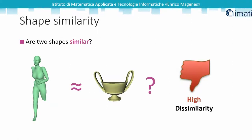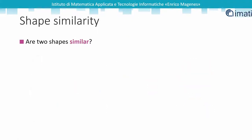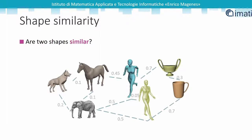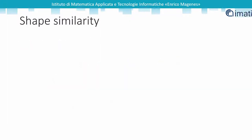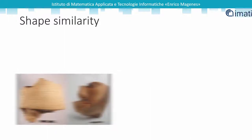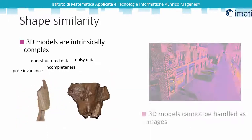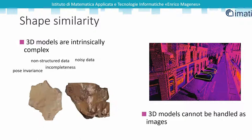Multiple criteria are necessary to span across large collections of shapes, defining relations between objects in multiple search environments. Working with 3D models, we have to face specific challenges such as non-structured data and pose invariance.